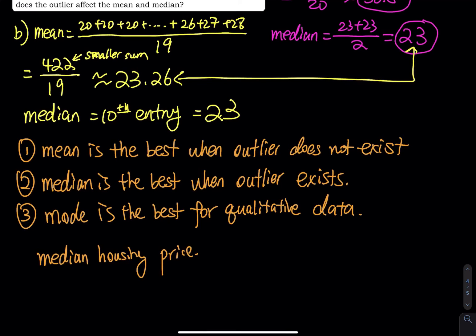Right? Because in that city or in that town, some house can be really, really cheap, and some house can be really, really expensive. So if you consider the median, when you consider the median, the cheap house and a very expensive house, they don't affect the mean anymore.